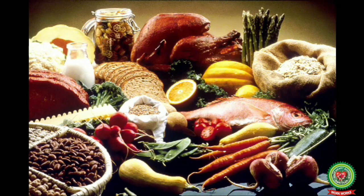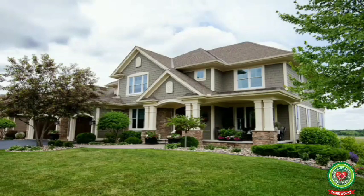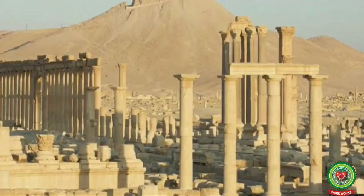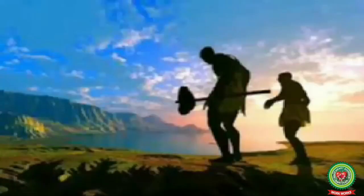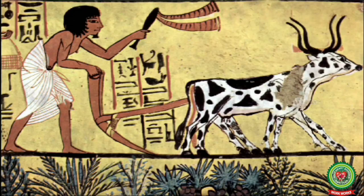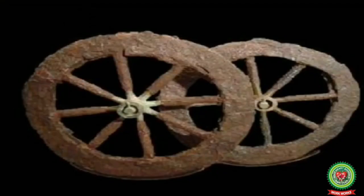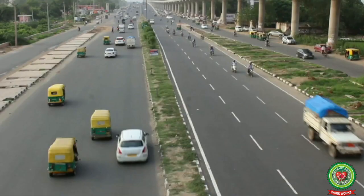We know that we need food, water and a safe place to live. From ancient times, man has been in search of food, water and shelter, for which he used to move from one place to another. In the initial stage, men used to walk for basic needs, then domestication of animals started, then the invention of the wheel led to the modern transport system.